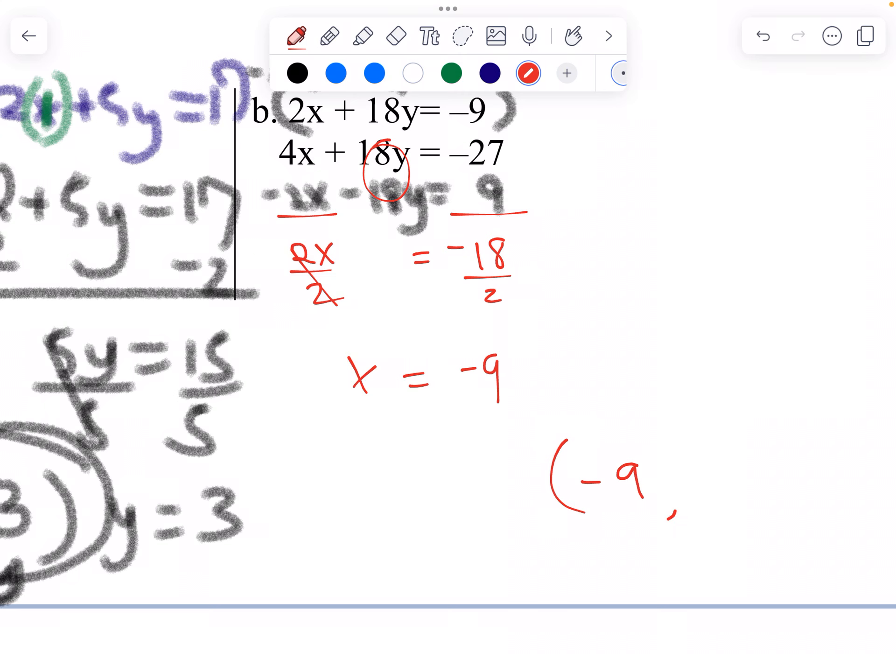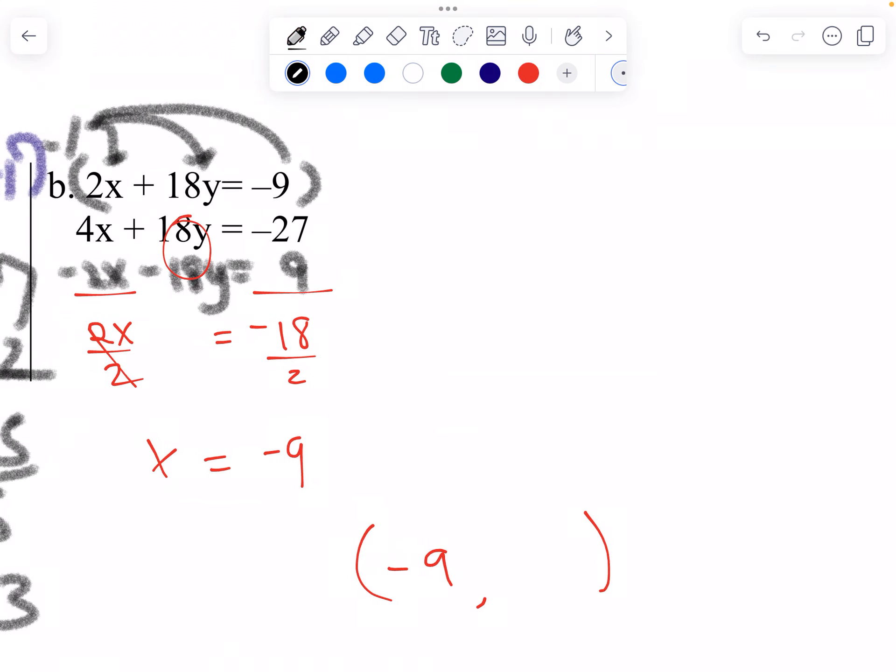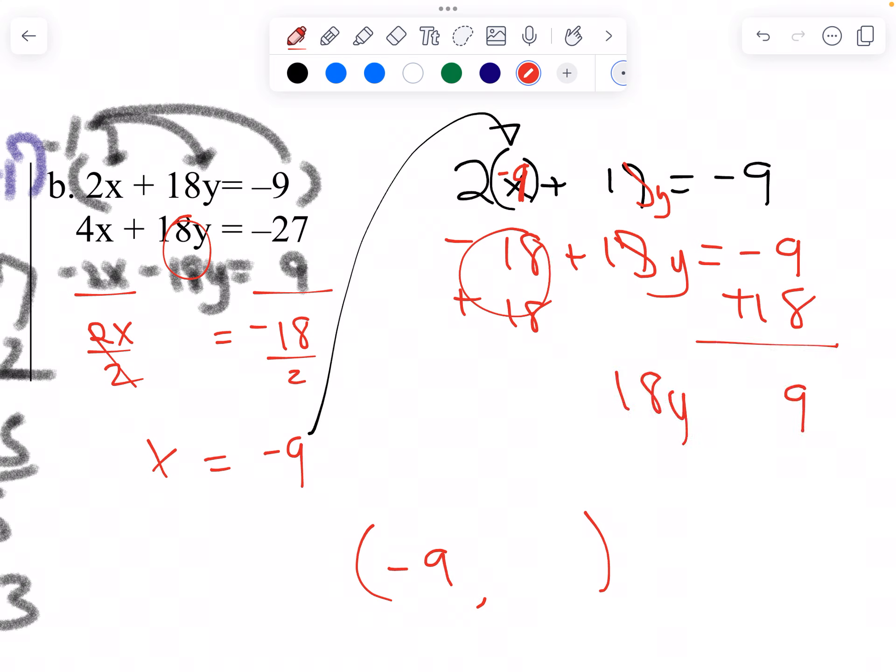So negative 9 comma and, 2x plus 17y equals to negative 9 is the one I'm saving. Put x equals to negative 9. That means whatever x is. There's the x. I'm going to put negative 9 there. It's negative 18 plus 18y equals to negative 9. Add 18. Add 18. It's 9 there. 18y equals to that. Divide by 18. Y equals to 1 half. Right there.